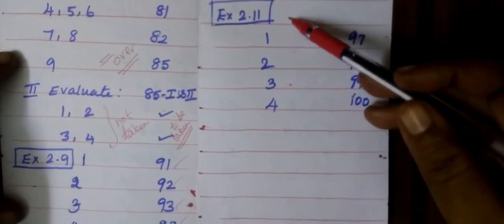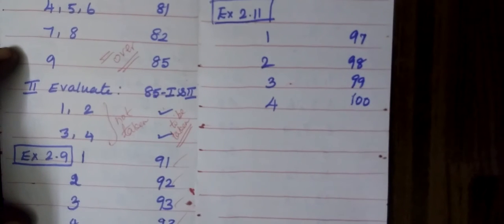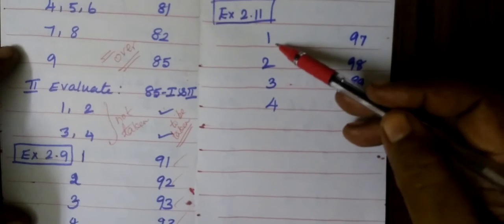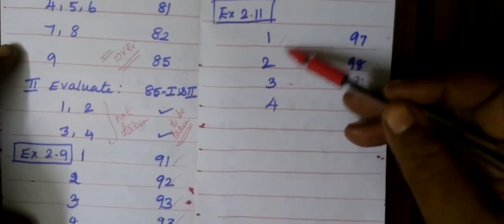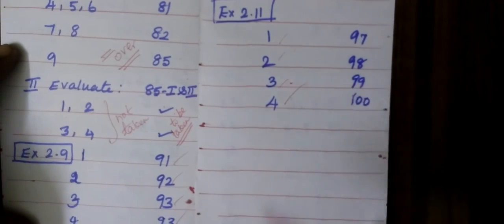Now coming to Exercise 2.11. So 2.11, the total are questions number 1, then 2, 3, and 4.